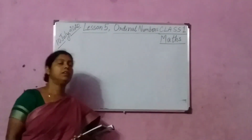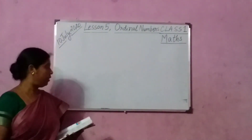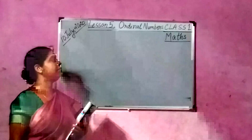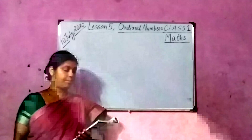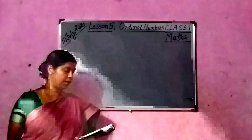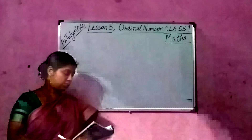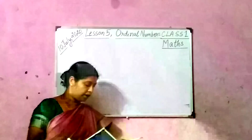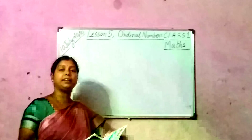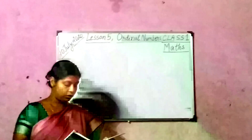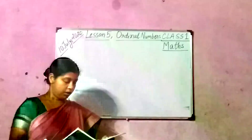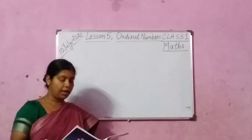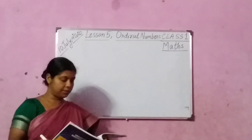Good morning children. Today we shall continue with lesson 5, that is ordinal numbers in class 1. Please see page 14. Here you see there are 10 clowns. Clowns are actually jokers with colored caps.